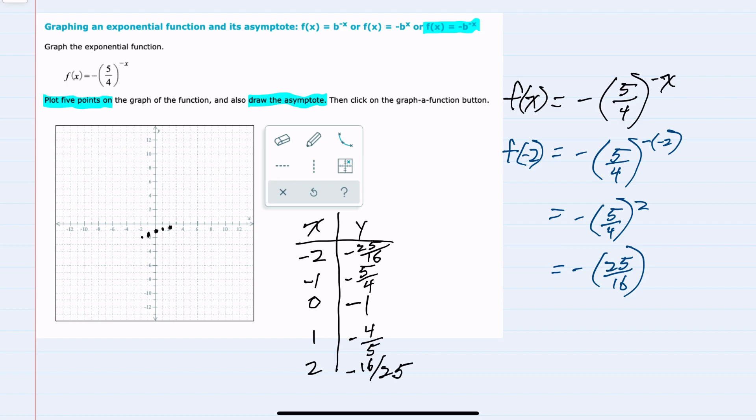We can see that this is going to start to stretch further and further with larger negative numbers. And as I put in larger positive numbers, this is going to get closer and closer to zero. So my asymptote is going to be y equals zero.